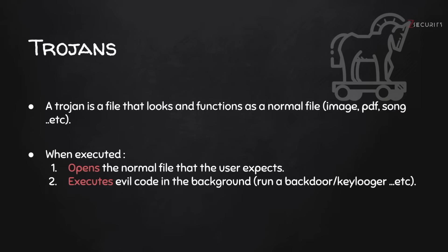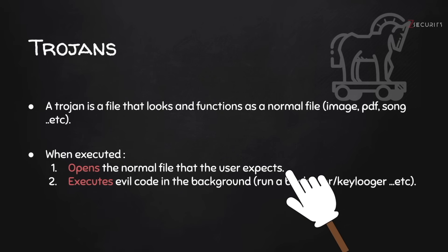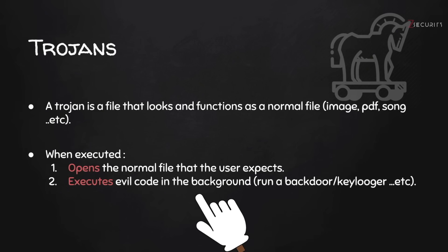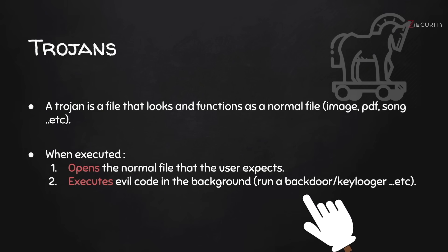The goal is to generate a Trojan — a file that opens up a normal file that the target person should be interested in. This can be an image, a PDF, or anything you want, but at the same time, execute code in the background for a backdoor, a keylogger, a credential harvester, or anything useful to you as a hacker.